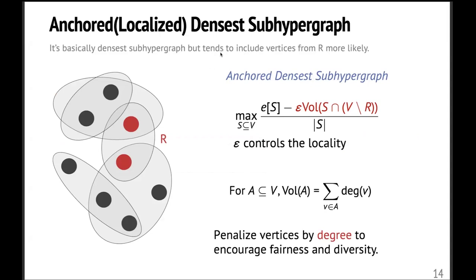So the objective we consider is called anchored densest subhypergraph. So basically it's still densest subhypergraph, but it tends to include vertices from the reference set R more likely. So the way to achieve this is that we will add some penalties for including vertices outside R into the final answer S. So if you want to add some vertices outside the reference set, you need to incur some penalties. And the penalty is proportional to the vertex degree, since we want to encourage fairness and diversity. And also we add some parameters to control the locality. Here we denote it as epsilon. So if epsilon equals to zero, then this objective will degenerate to the classical densest subhypergraph objective. So there is no locality at all. But if epsilon is infinity, then you won't include any vertices outside R. So you can control the trade-off.